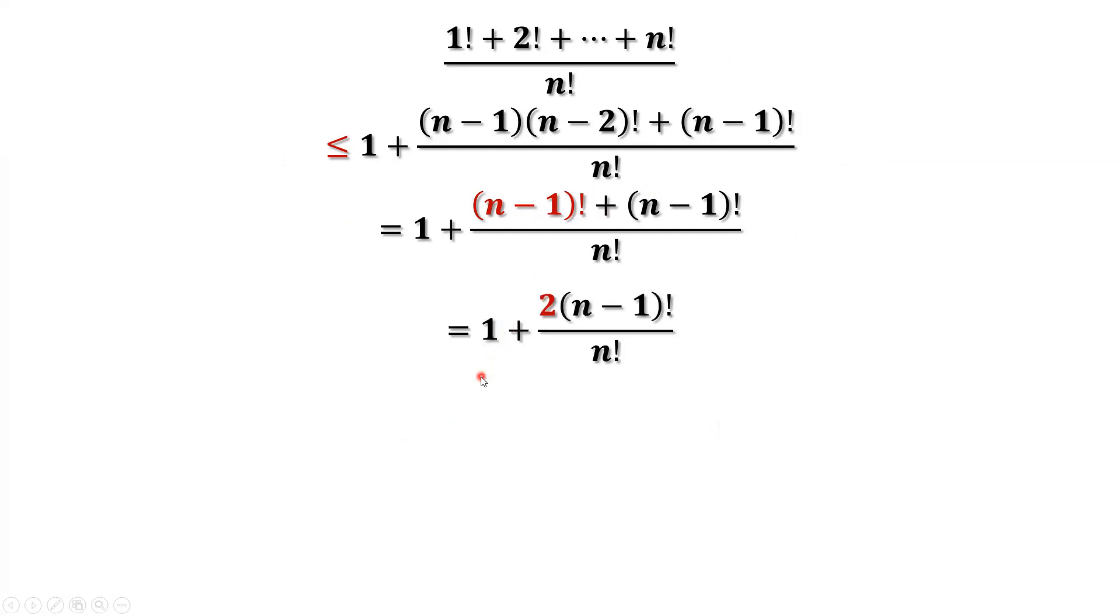What is the definition for n factorial? n factorial equals 1 times 2 times 3 times until times n. So what is the difference between n minus 1 factorial and n factorial? n factorial equals n times n minus 1 factorial.